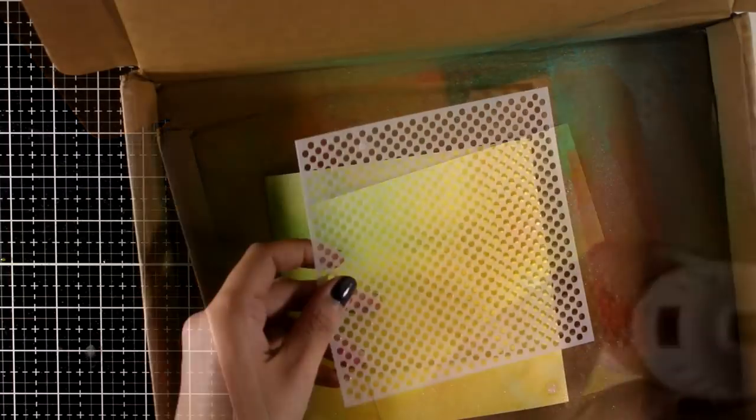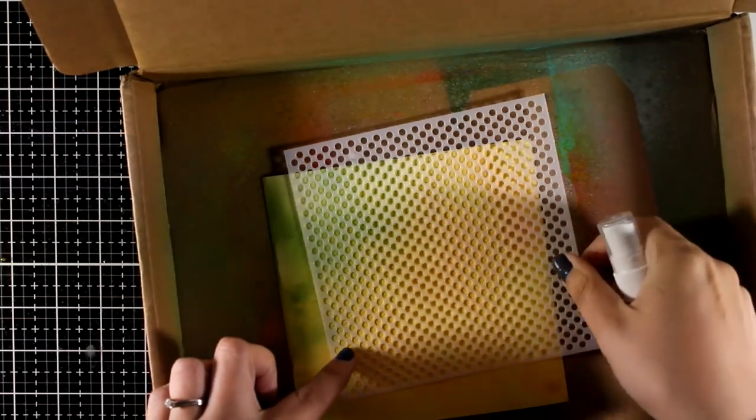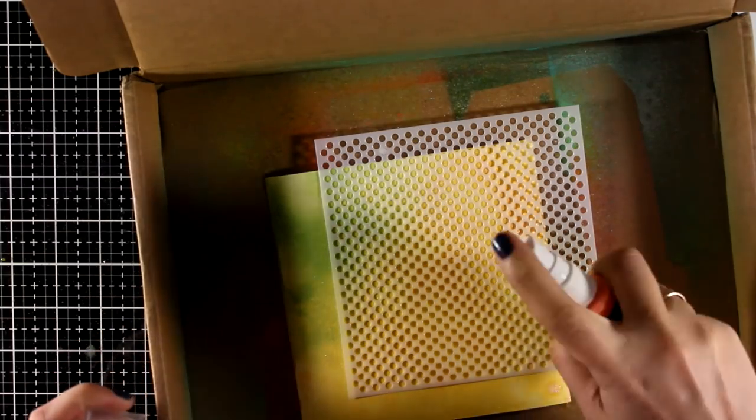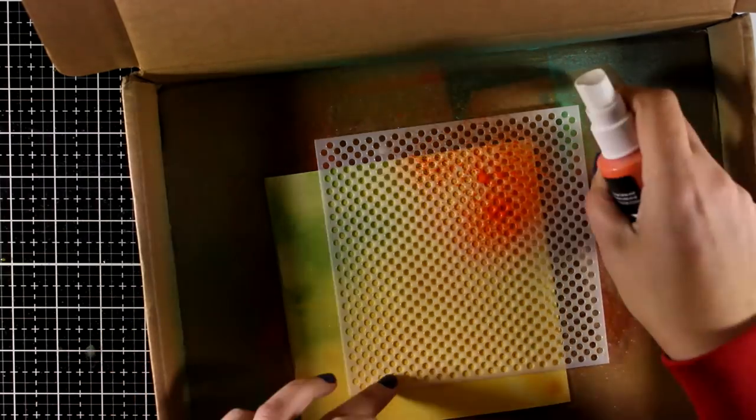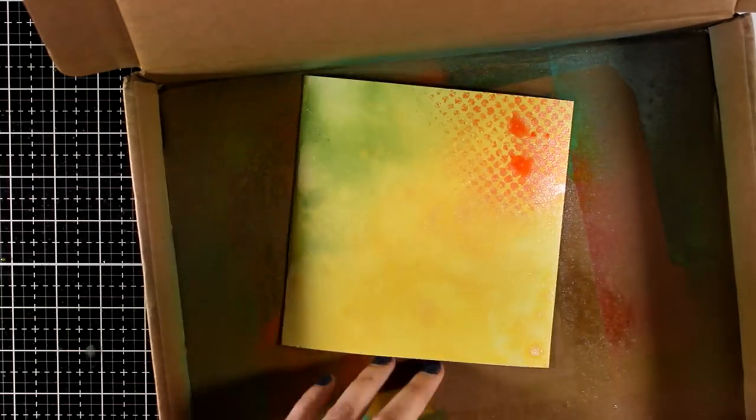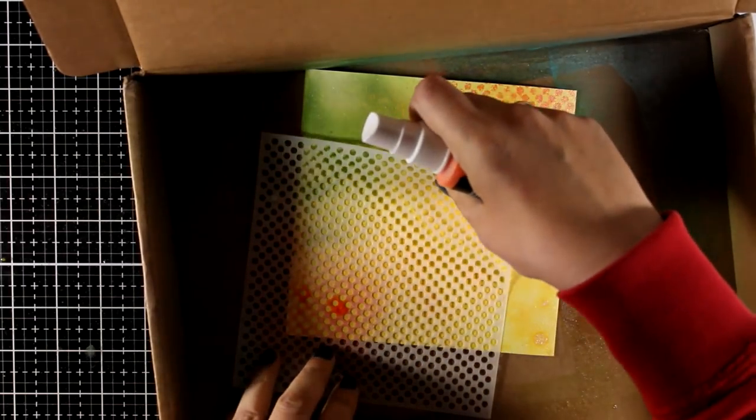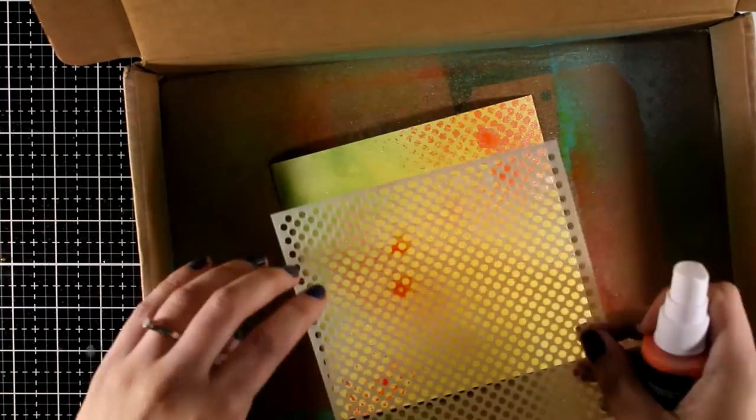There is also a giveaway on my blog, so make sure to visit and join. Now I'm going to use a stencil and work over it with another spray. This is an orange color called Sunkissed, one of the shimmer sprays by Altenew.